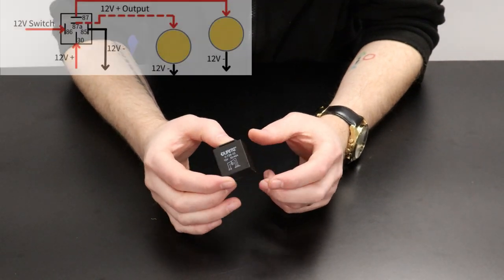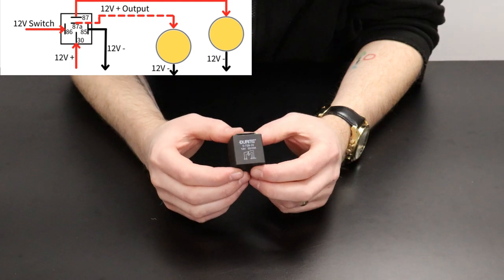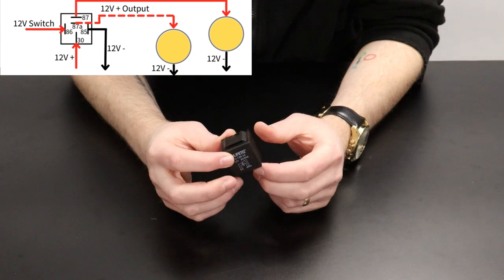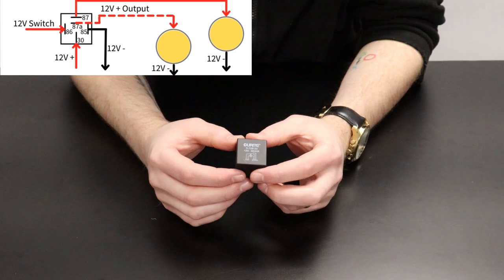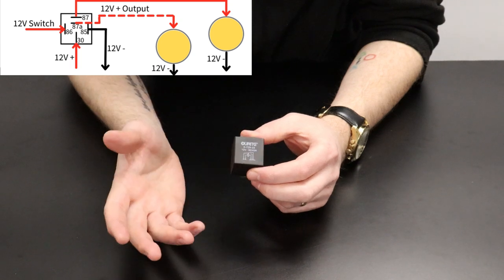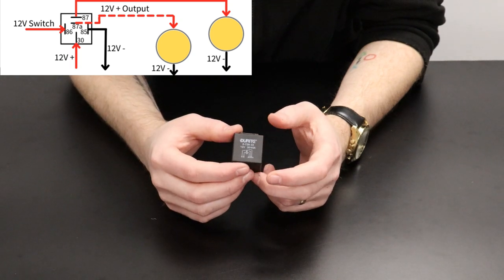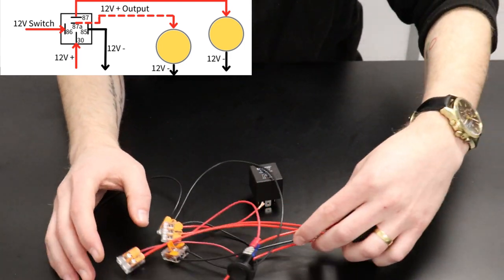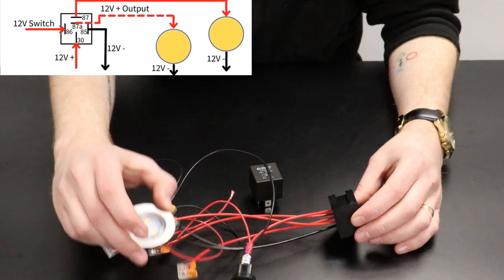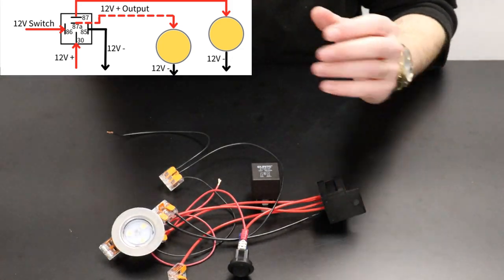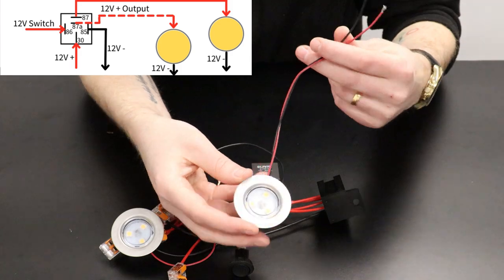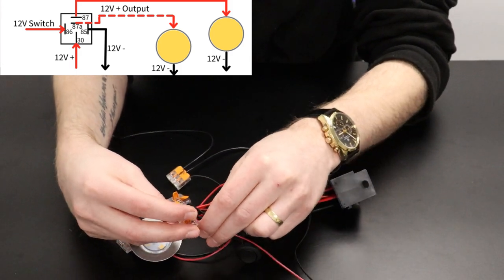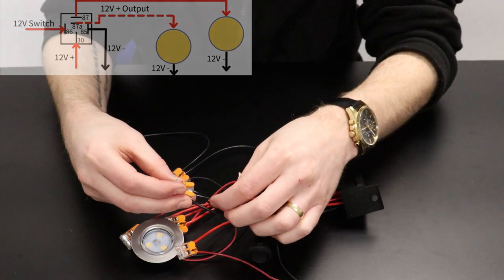So to wire up these relays you would connect your switch 12 volt feed to terminal 86. Terminal 85 is your earth. Terminal 30 is your 12 volt plus feed that comes from your battery or in our case our power supply. Terminal 87 goes to the positive of your first load which will be our LED light. Terminal 87A will go to the positive of your second light which we will insert into our circuit now using our WAGO connectors.